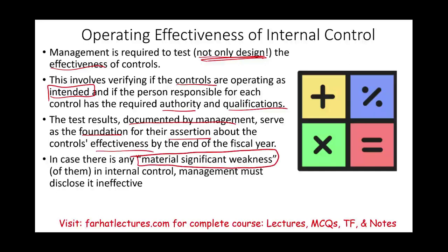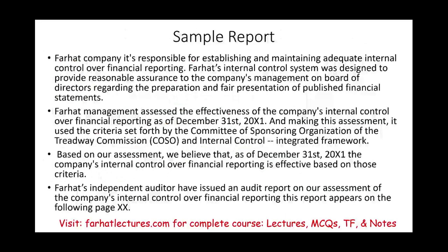A material significant weakness is a major issue. Management must disclose that the control is ineffective if such a major material weakness exists. Major material weakness means it's allowing an error to affect the financial statements.